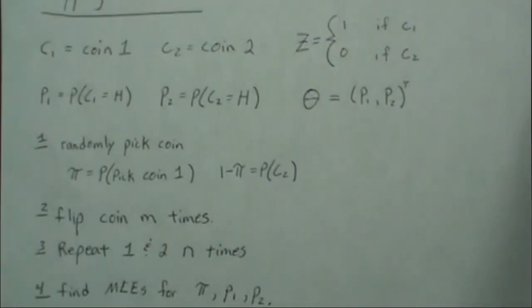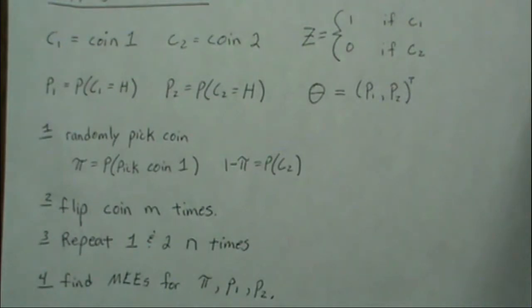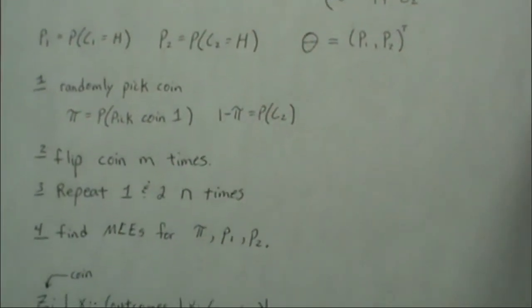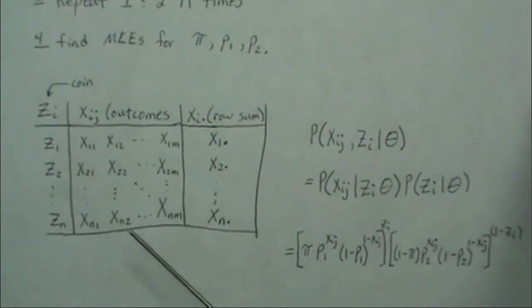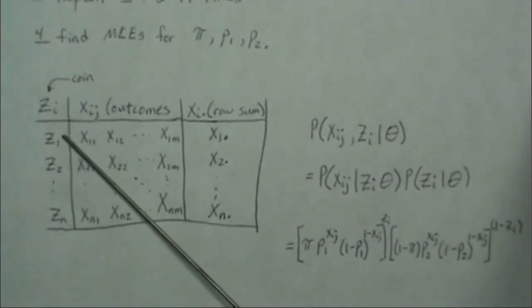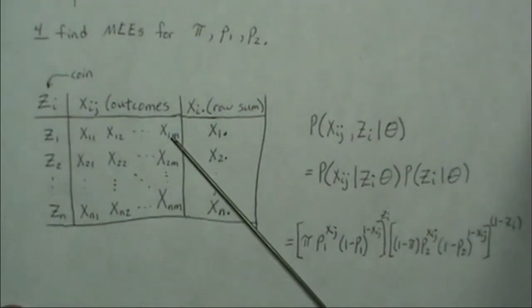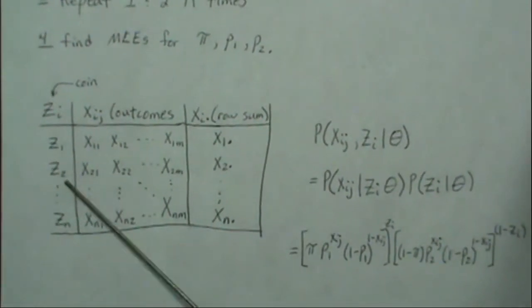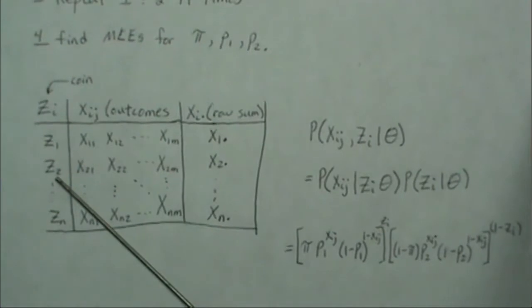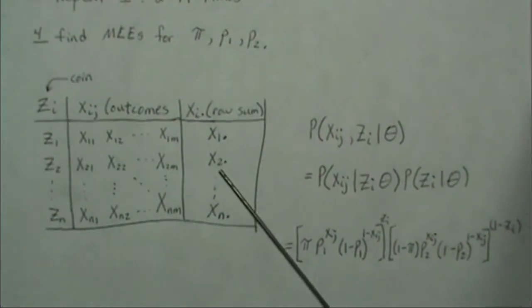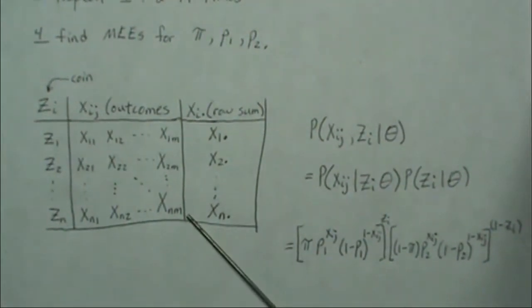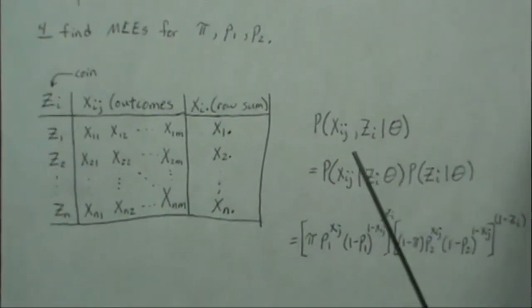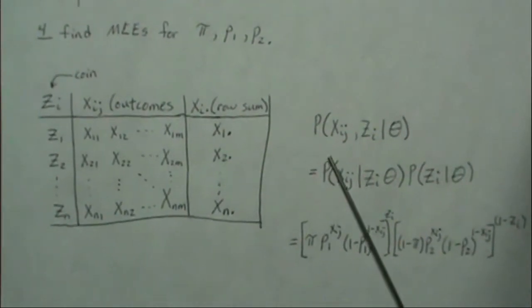We're going to flip that coin m times, then repeat steps 1 and 2 a total of n times, and find the MLEs for pi, P1, and P2. So here is the setup: we randomly pick a coin, flip it m times — the row sum — and Z2 is where we randomly pick the coin, flip it n times, giving us the sum. We repeat this n times.